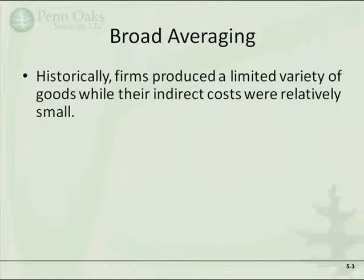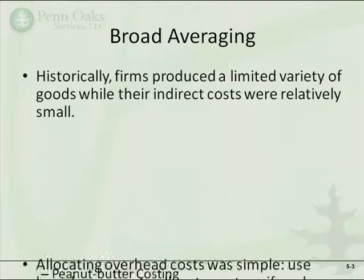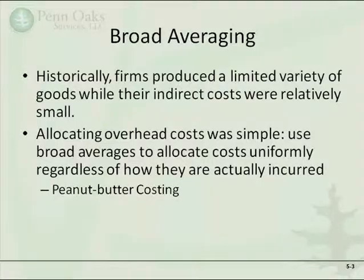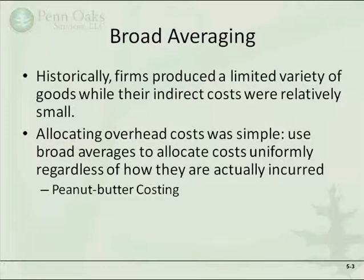Historically, firms produced a limited variety of goods and their indirect costs were relatively small. Therefore, allocating overhead costs was simple. You could use broad averages to allocate costs uniformly regardless of how the actual indirect costs were incurred. If direct materials and direct labor were the majority of costs and indirect costs were relatively small, then the degree of error in costing various cost objects or products was relatively small because the percentage of total cost was relatively small.